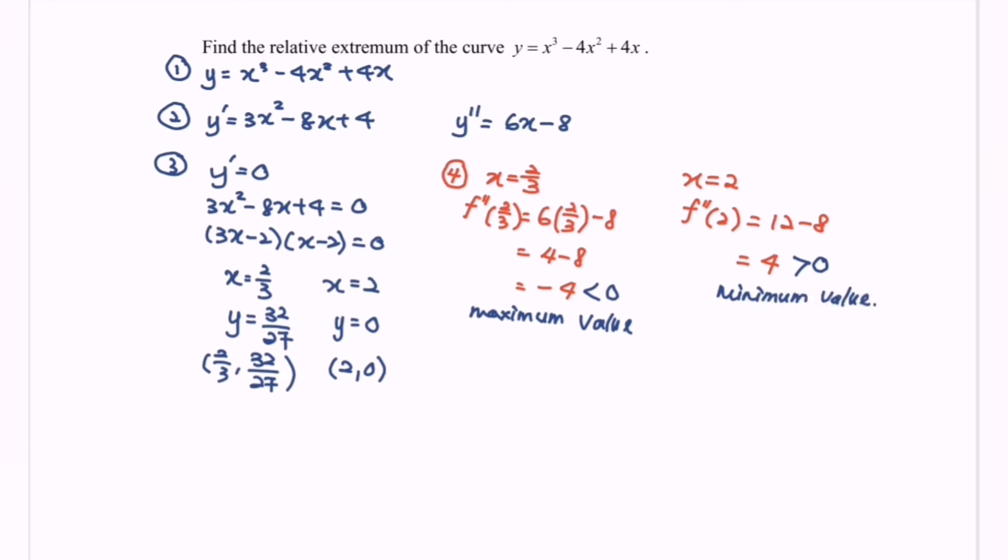So as a conclusion, the point 2 over 3, 32 over 27 is a maximum point. Well, for the point 2, 0, it is a minimum point.